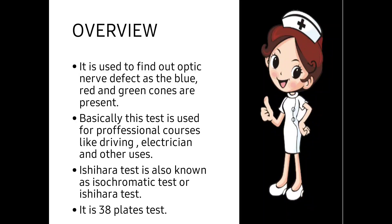Basically this test is used for professional courses like driving and electrician. It is used for driving because the traffic light consists of three colors, out of which two color cones — red and green — should be present. A person who is color blind for green or red cones will not be able to get a driving license. In the case of electricians, fires cannot be identified by the patient if the person is color blind.